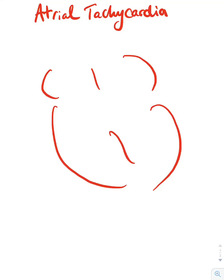Today we'll talk about atrial tachycardia. Basically, atrial tachycardia is a tachycardia that arises in the atrium — it could be the right atrium or the left atrium — and this is one of the supraventricular tachycardias.